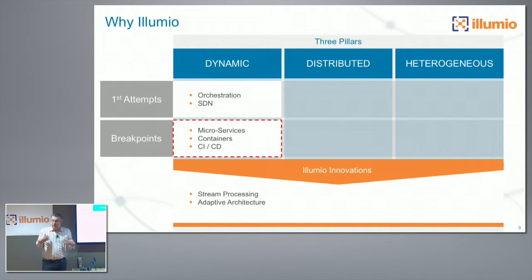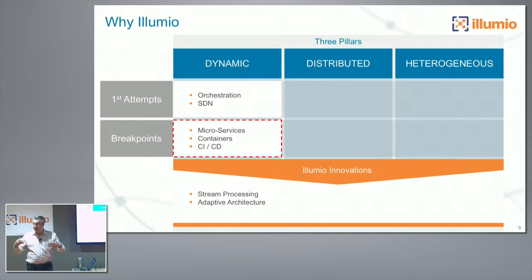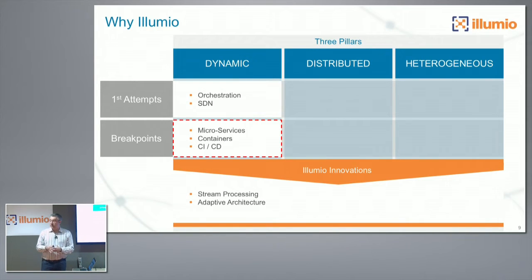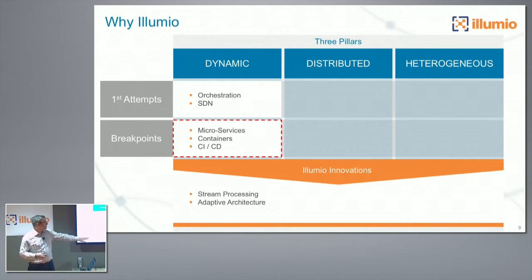What Illumio did architecturally: first, we knew all this telemetry coming in had to be handled by a stream processing engine on the front end. That was a fundamental principle. And having an adaptive architecture with a declarative policy model — you describe how you want the policy to be, and the system generates instructions and adapts in real time to maintain that policy invariant for you.